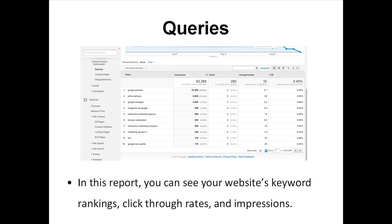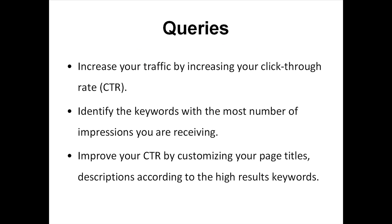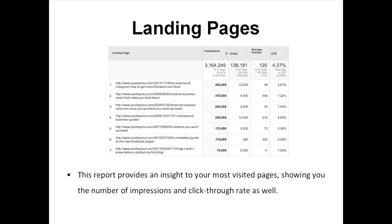In the Queries report, you can see your website's keyword rankings, click-through rates, and impressions. Identify the keywords with the most number of impressions you are receiving. The most effective way to increase your traffic is by increasing your click-through rate, or CTR. Improve your CTR by customizing your page titles, descriptions, and keywords. Keep your titles approximately within 50 to 60 characters, and descriptions within 200 characters. Too long a text risks losing readers because most people only skim for their interest. Similar to the Queries report, the Landing Pages report gives you an insight into your most visited pages, showing you the number of impressions and click-through rates as well.